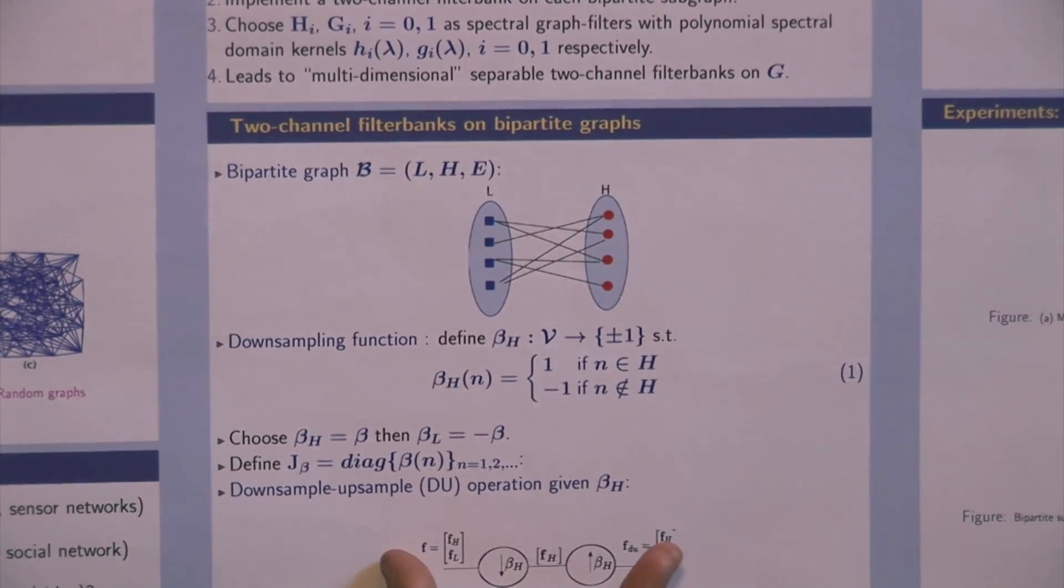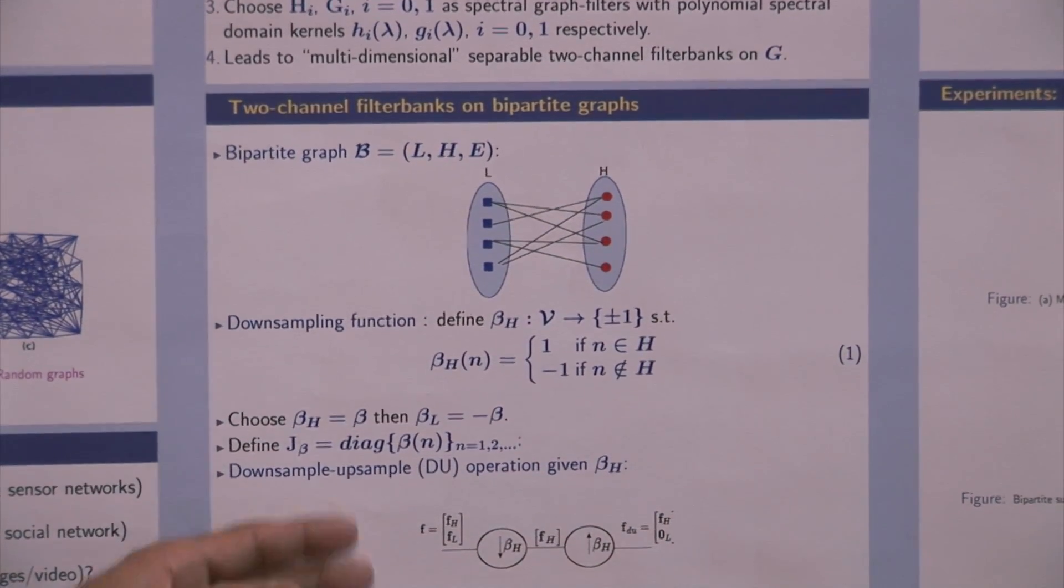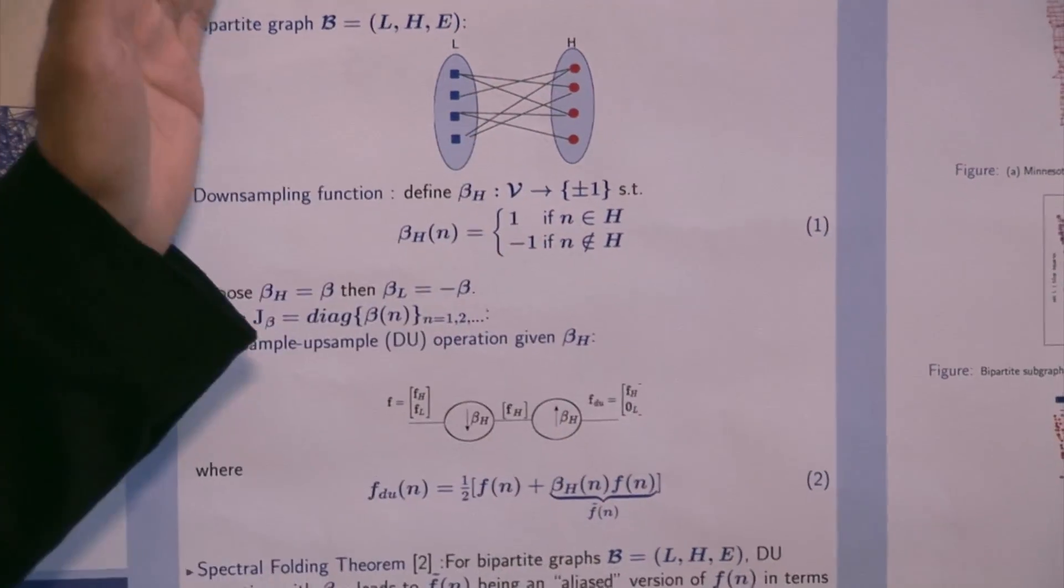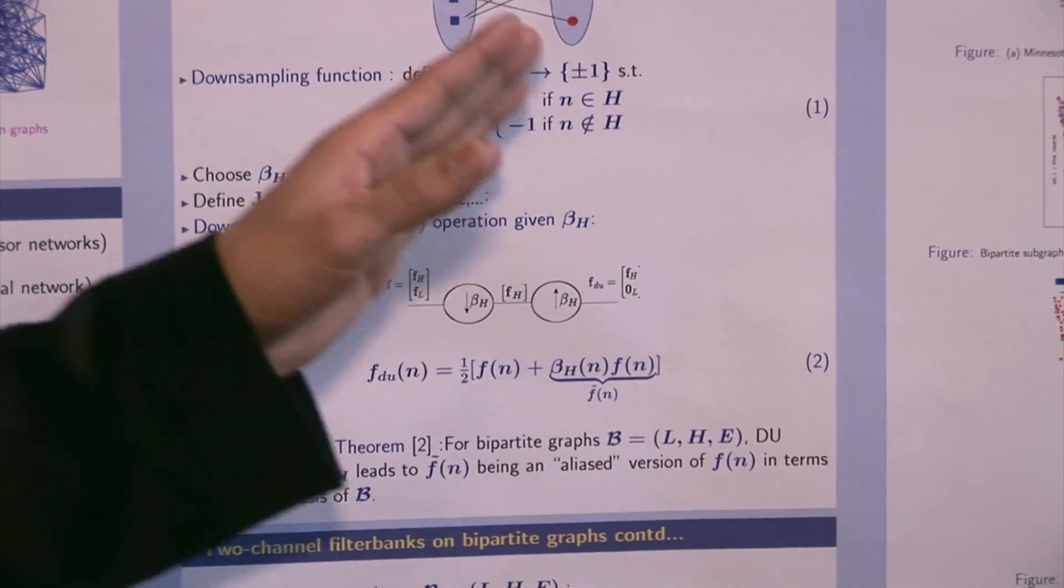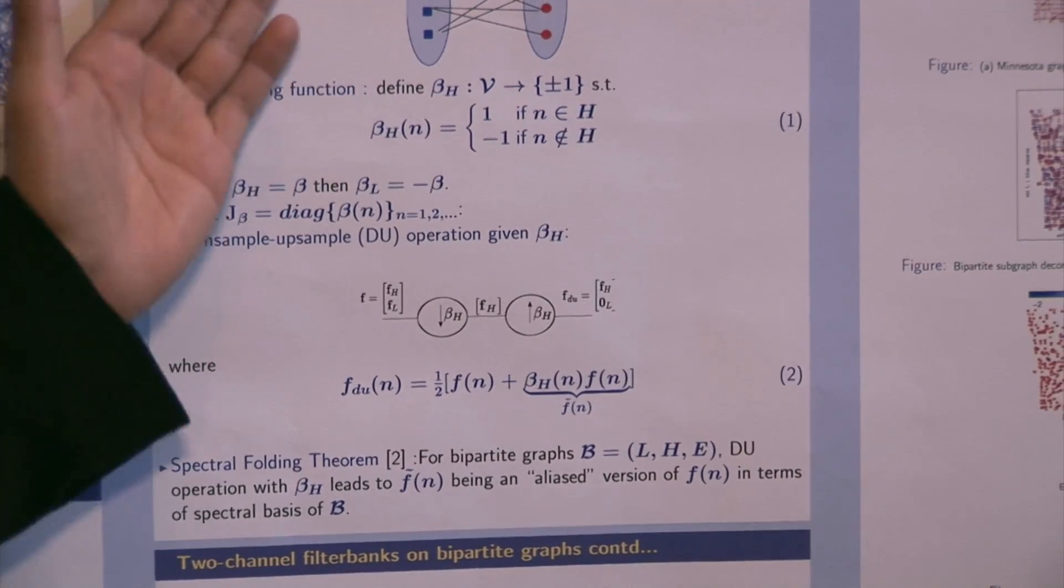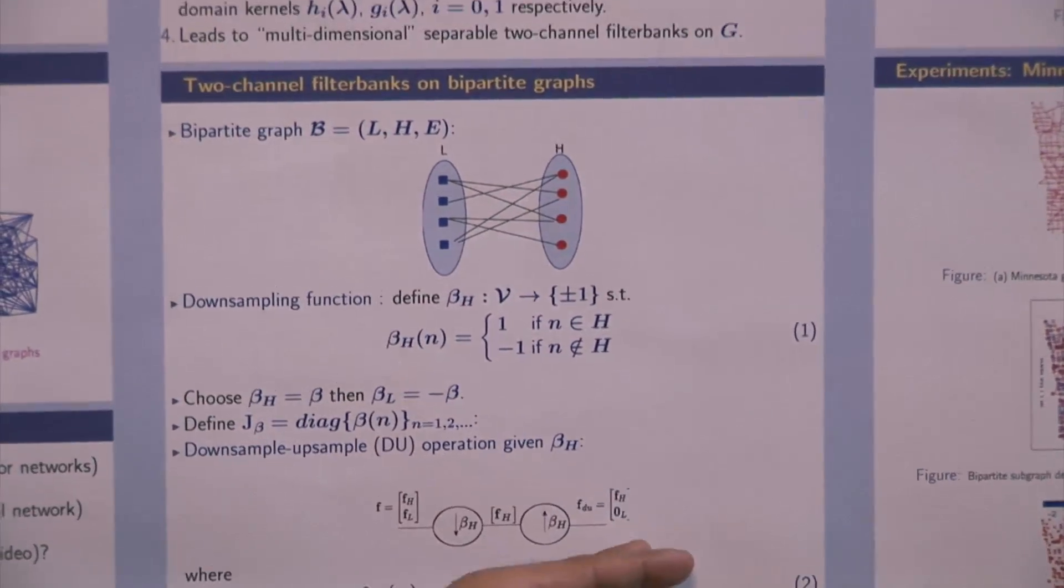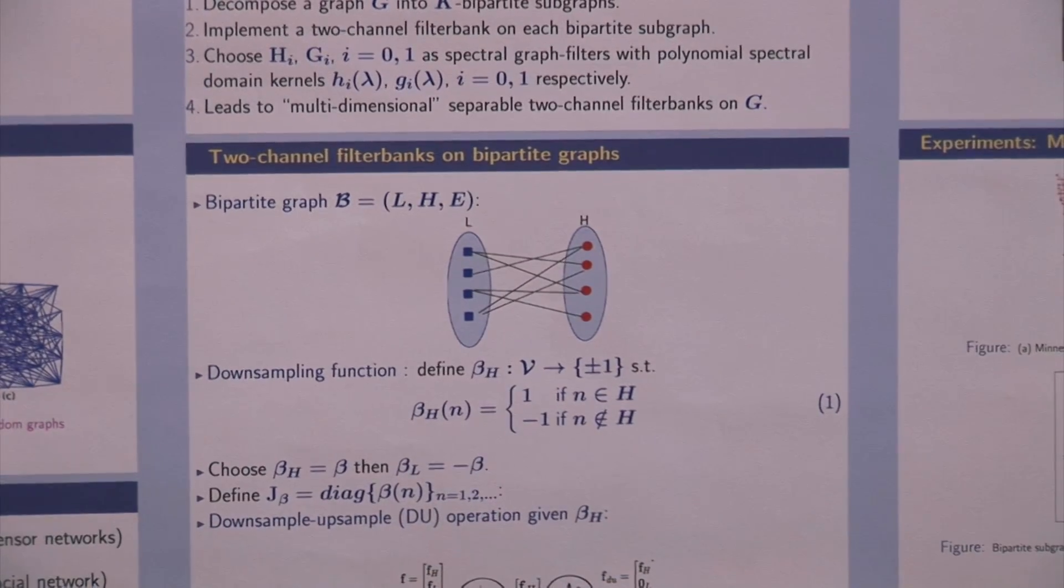Then we apply downsampling, upsampling operations on these graphs. Downsampling means we only keep the samples corresponding to H. And upsampling means we replace the samples at L by zero. So that's downsampling, upsampling operations.